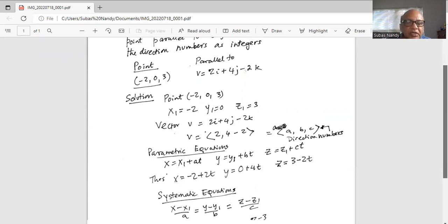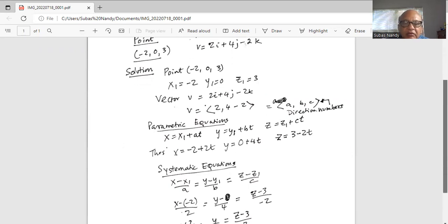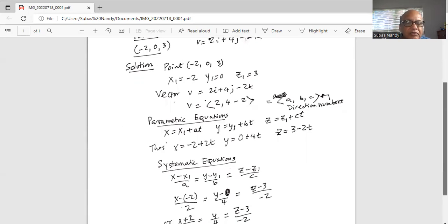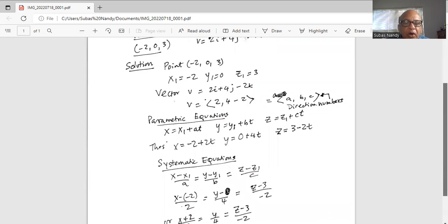So the symmetric equations are (x - x1)/a, (y - y1)/b, and (z - z1)/c. All three are equal, being equal to t. And x - x1 is -2, so (x - (-2))/2. And y - y1, y1 is 0, so (y - 0)/4. And z - z1 which is 3, (z - 3)/(-2).